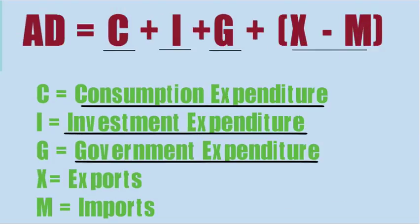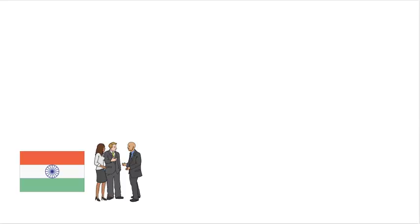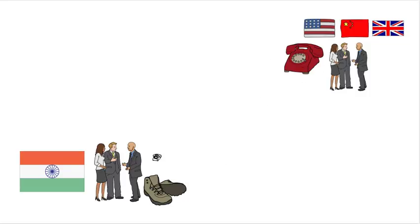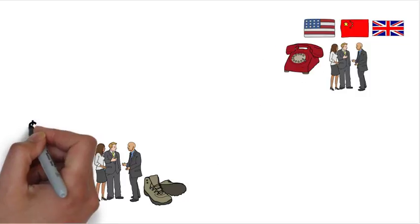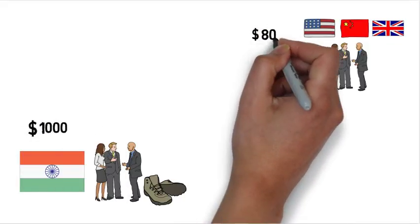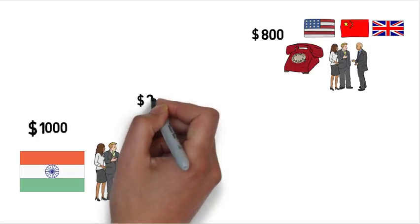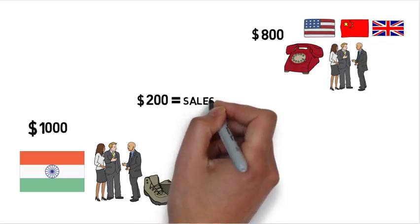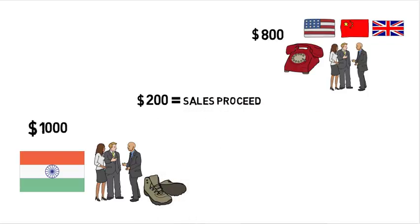Last but not the least, net earnings — that is exports minus imports — is another component of aggregate demand. All the goods that we sell to foreign countries are exports and all that we purchase from them are imports. If entrepreneurs expect to export goods worth 1000 and import goods worth 800, then they expect net earnings worth 200. This 200 is also the sales proceeds that the entrepreneurs expect, hence it's a part of aggregate demand.